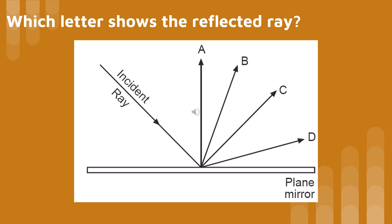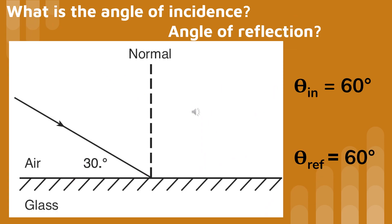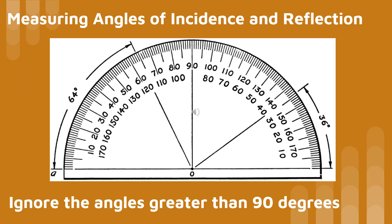Which letter correctly shows the reflected ray? The answer is C. Since the angle of incidence is measured from the normal, and the normal is always drawn perpendicular to the reflecting surface, the angle of incidence in this picture is 60 degrees. When using a protractor to measure angles, ignore the angles greater than 90 degrees.